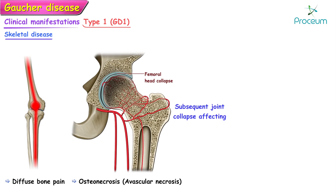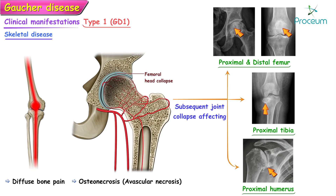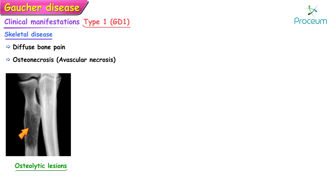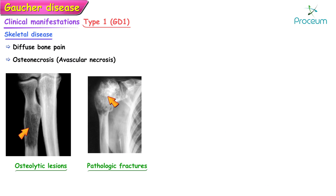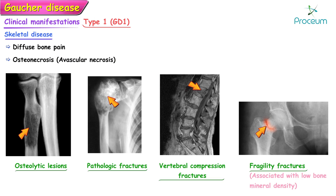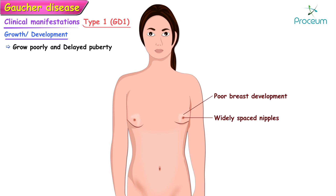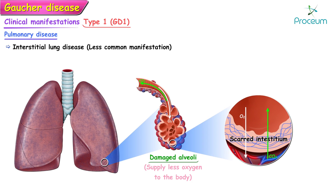Another important clinical manifestation is diffuse bone pain punctuated by painful crises that often result in osteonecrosis with subsequent joint collapse, affecting the proximal and distal femur, the proximal tibia, and the proximal humerus. Osteolytic lesions, pathologic fractures, vertebral compression fractures, and other fragility fractures associated with low bone mineral density also occur in patients with Gaucher's disease.